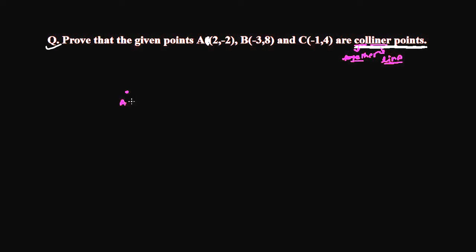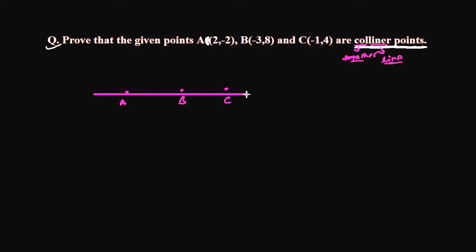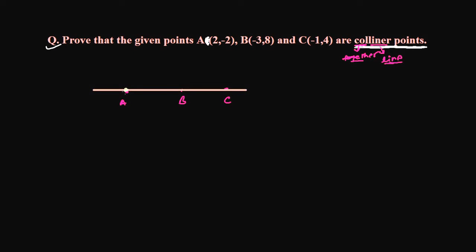This is point A, this is point B, and this is point C. If all these points are together in a line — suppose this is our line — if these all points are together in a line, say point A, point B, and point C, then I can say that these are collinear points and I can prove it. But how can I show that these are together in a line?